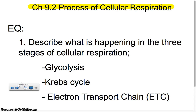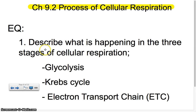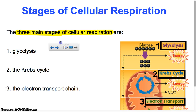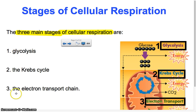The next part, chapter 9.2, talks about the whole process of cellular respiration. The essential question for 9.2 is: describe what is happening in the three stages of cellular respiration — glycolysis, the Krebs cycle, and the electron transport chain. Cellular respiration has three main stages that go in order: it first starts with glycolysis, then the Krebs cycle, and then the electron transport chain as the final step.